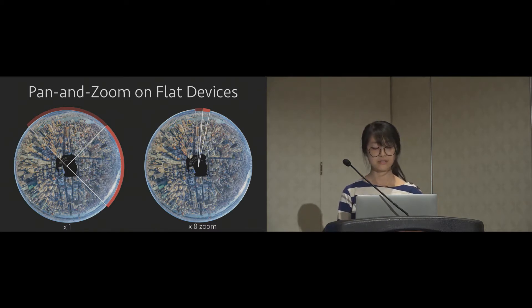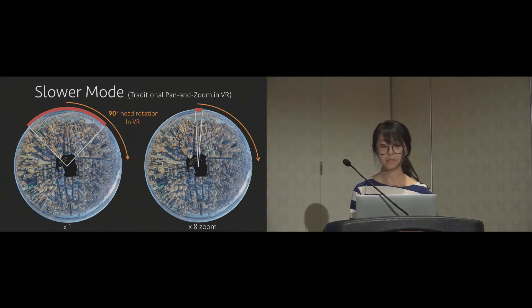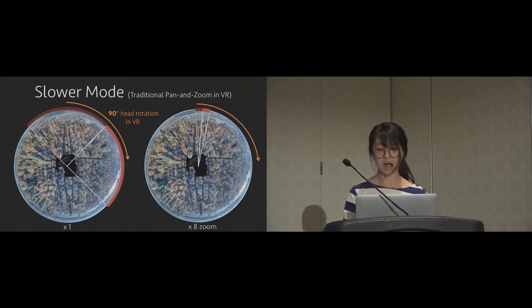Then raises the question, why not just use slower mode in VR? In VR devices, the direction of display is controlled by user's head rotation. If we also compensate panning to be slower in higher zoom level, it may result in two problems: physical challenges and a proprioceptive problem.